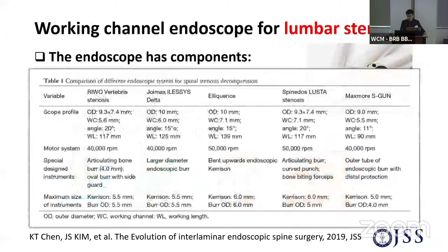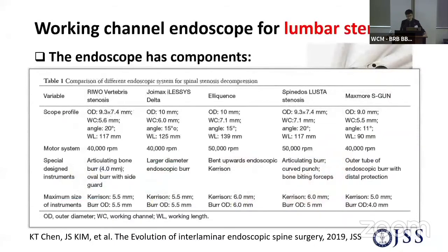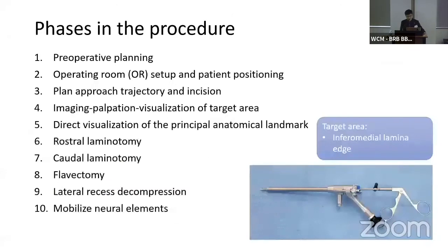Most vendors have already set up the endoscope for spinal stenosis. So indications have changed so much. Initially we just treated lumbar disc herniation, but nowadays we can treat spinal stenosis, central stenosis, lateral recess stenosis, and foraminal stenosis combined pathology as well.